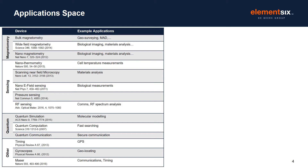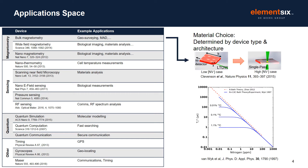This list shows you the potential applications that can be made possible by diamond quantum technologies. They are all at different technology readiness levels, but the most advanced is magnetic field sensing. The diamond requirements depend on the application, but also on the device architecture. To take rotating magnetometry as an example, you ideally want the longest spin coherence time, or T2 star, which should lead us to reducing the nitrogen and carbon-13 content in the material, as shown in the graph.